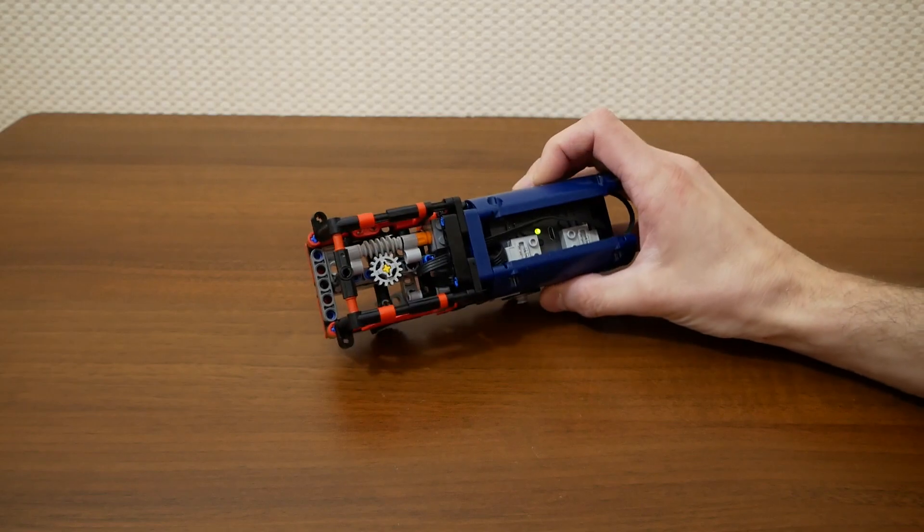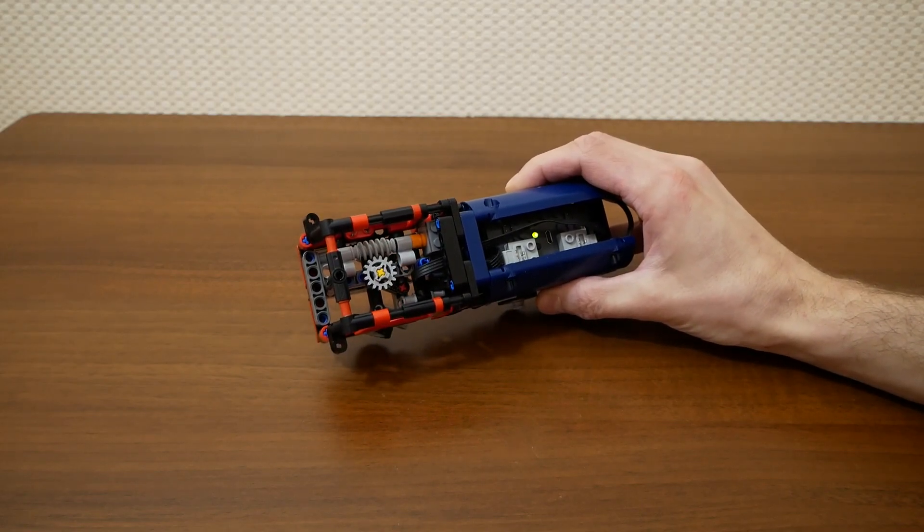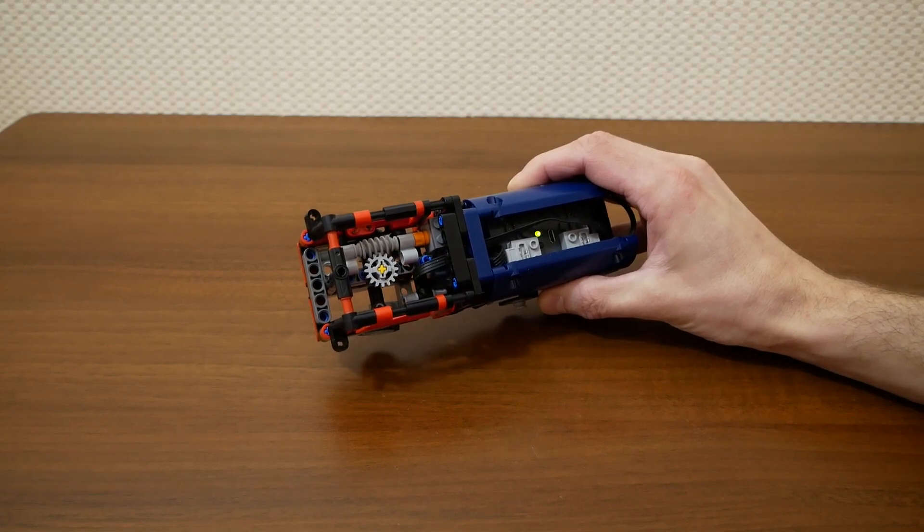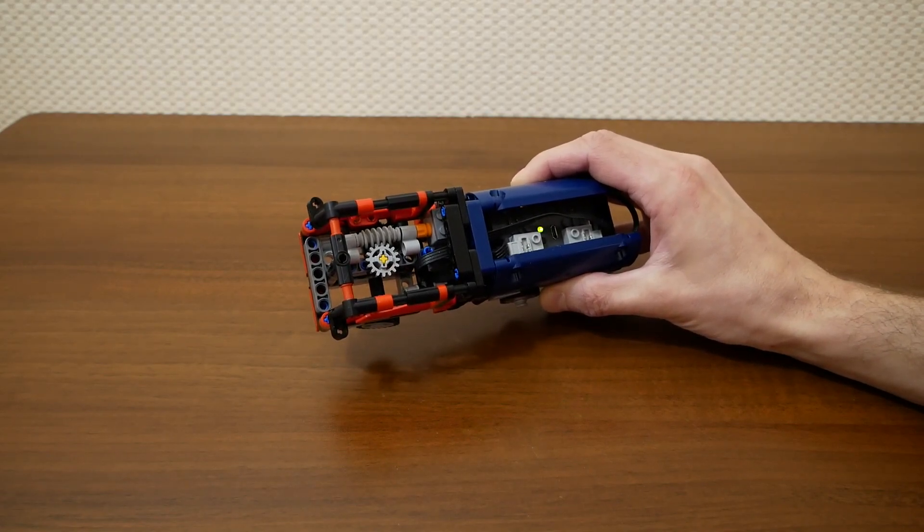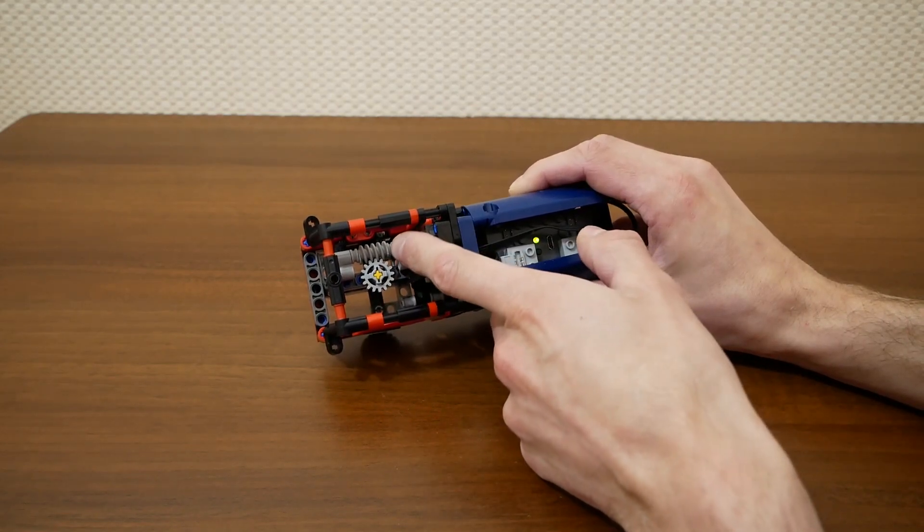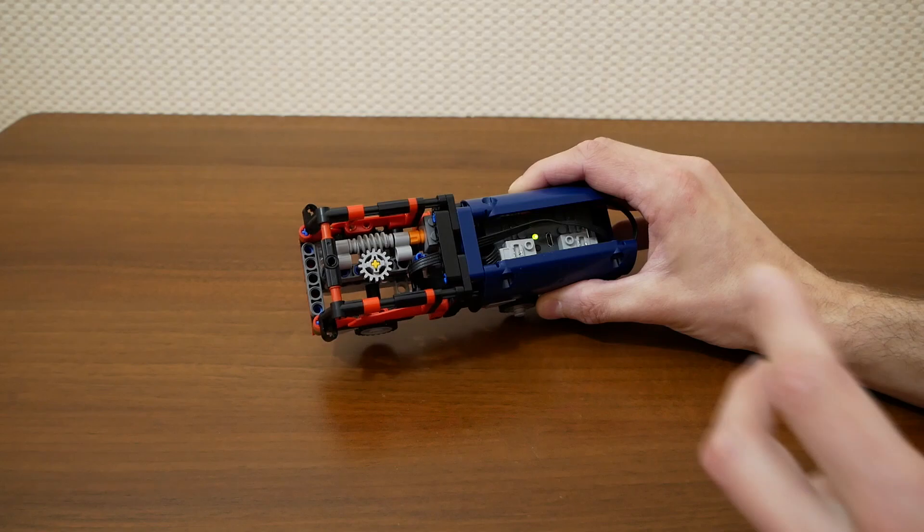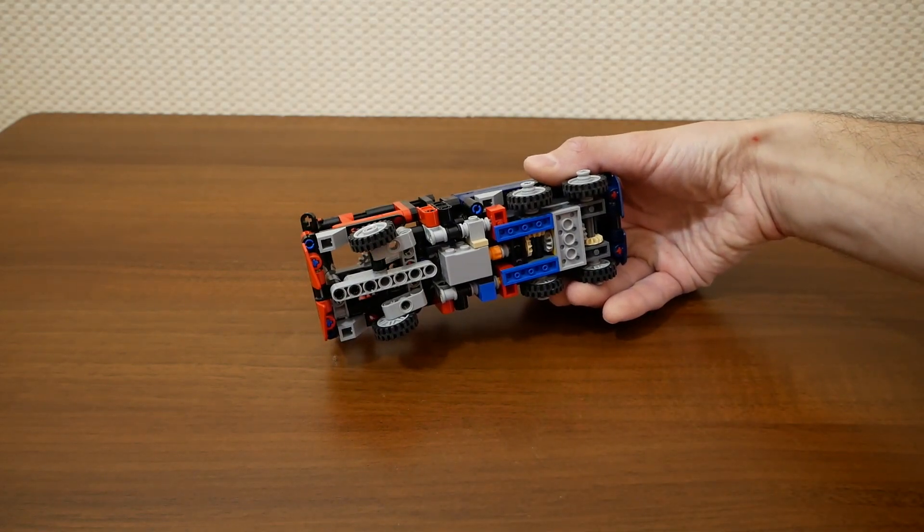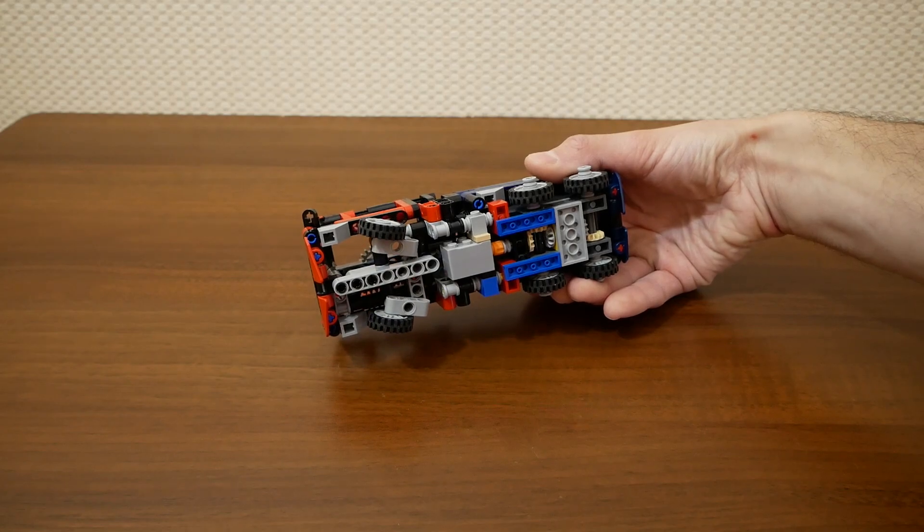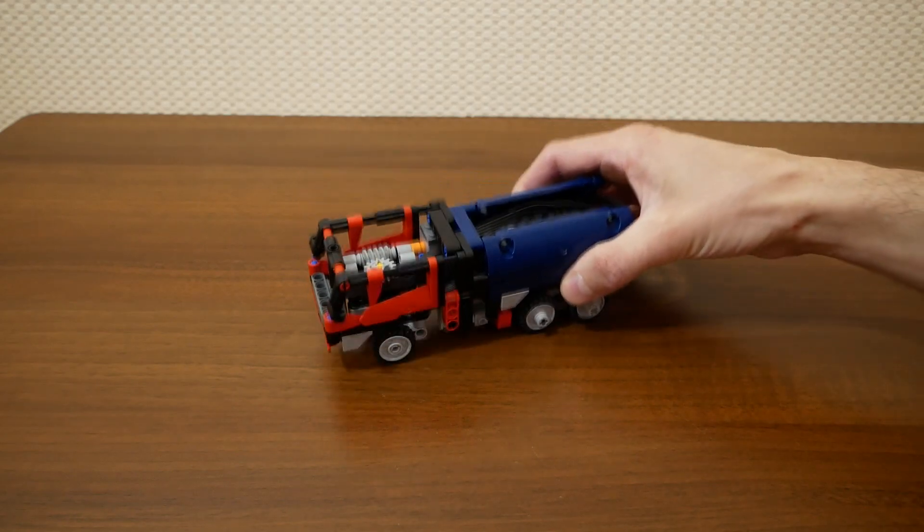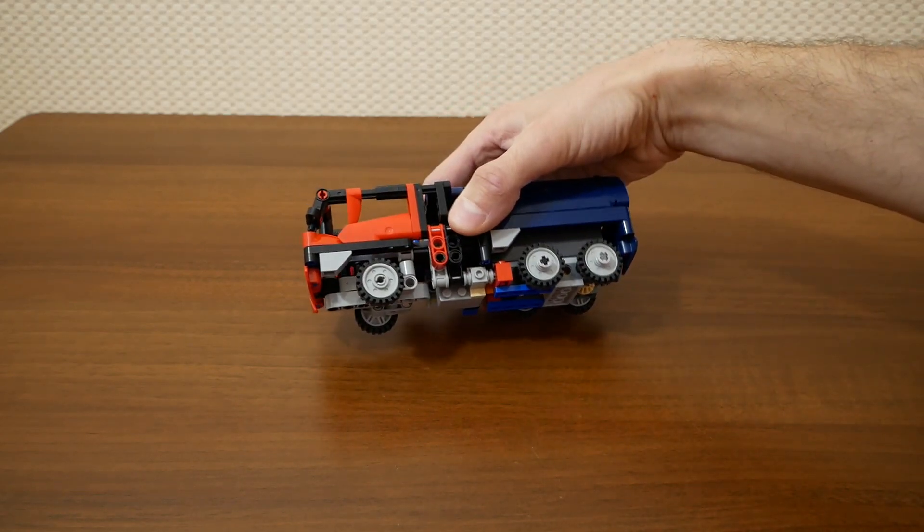And also here we have steering. Worm gear and 16T's gear work very well. Maybe we can try worm gear and 8T's gear to make the system more compact. And it's really easy to find the center with this reducer and it's very cool and playable.